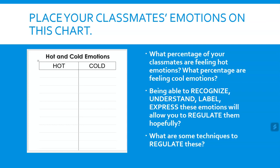I need you to be able to recognize, understand, label, and express these emotions — the first four letters in RULER. Which brings us to the question: how can you regulate hot emotions so you don't get yourself in trouble, where you're being highly emotional and impulsive and it causes difficulties for you?